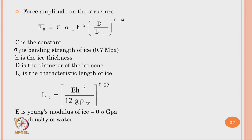The force amplitude caused on the structure is given by an equation where C is a constant, σ_F is the bending strength of ice (taken as 0.7 MPa), H is the ice thickness, D is the diameter of the ice cone, and L_C is the characteristic length of ice. In this equation, E (Young's modulus of ice) is 0.5 GPa and ρ_W (density of water) is 1000 kg/m³.